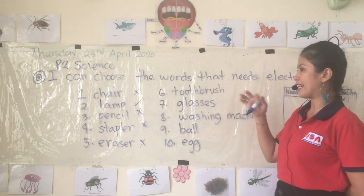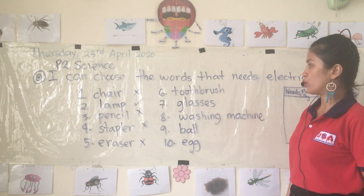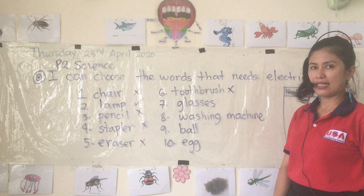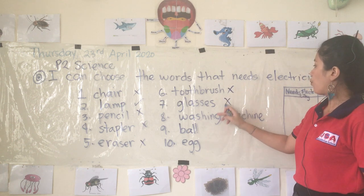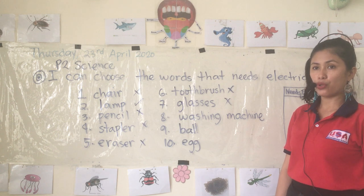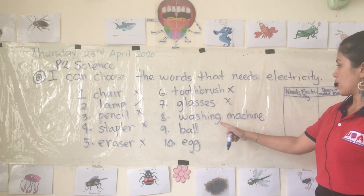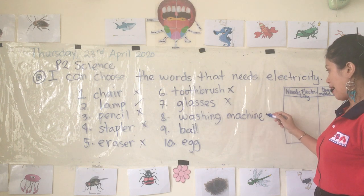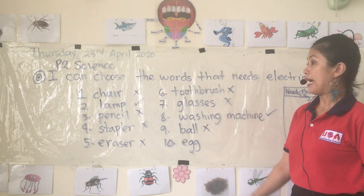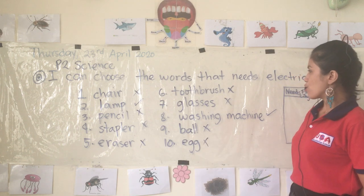Eraser — no. Toothbrush — some toothbrushes are electric, but we're talking about a regular one, so no. Glasses — no. Washing machine, the one you use to put your dirty clothes in — yes. Ball — no. Egg — no.